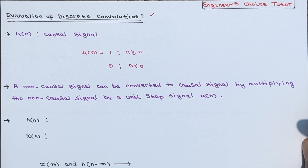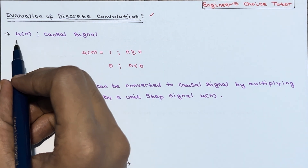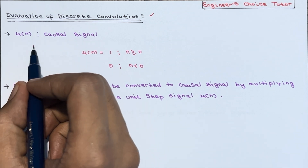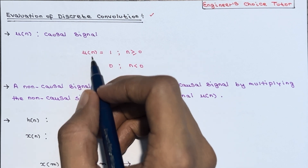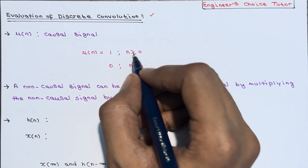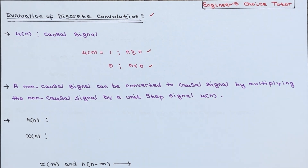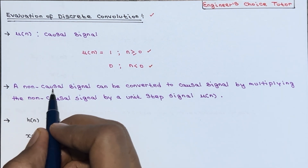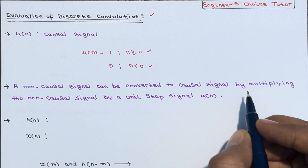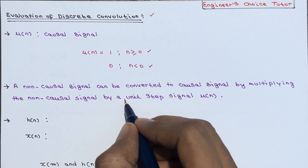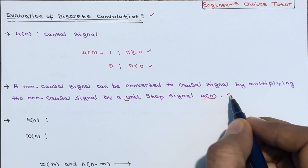Before going towards the evaluation, you should know about u(n) and the causal signal. u(n) is a causal signal. By definition, u(n) is 1 when n is greater than or equal to 0, and 0 when n is smaller than 0. Also, a non-causal signal can be converted to a causal signal by multiplying it by the unit step signal u(n).